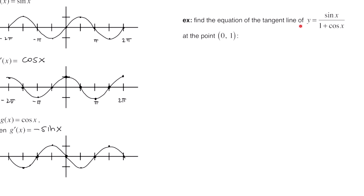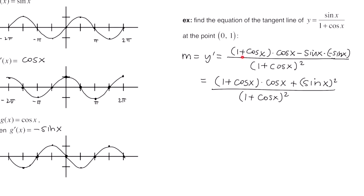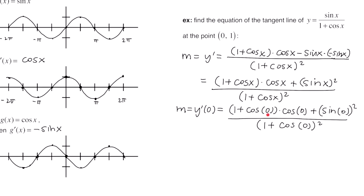This example says find the equation of the tangent line of y equals sine x over 1 plus cosine x at the point (0, 1). To write the equation of a tangent line, you need a point and slope. We already have the point, so we take the derivative using the quotient rule: low d high minus high d low, all over the low squared. The derivative of sine is cosine; the derivative of cosine is negative sine. Plugging in x = 0 and simplifying, we get slope equal to 1/2.